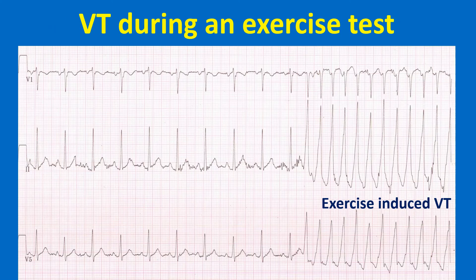This ECG shows VT occurring during an exercise test. It is a monomorphic VT with QRS negative in V1 and positive in lead II and V5, suggestive of RVOT VT.